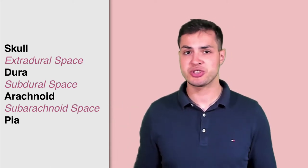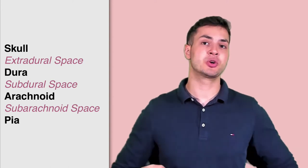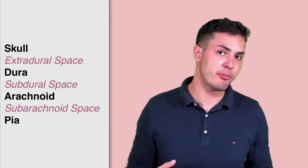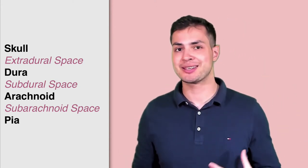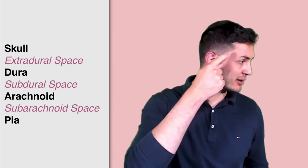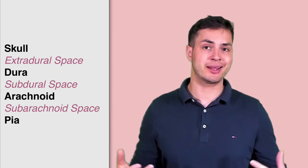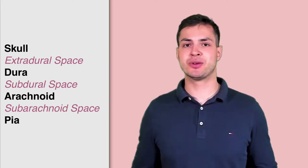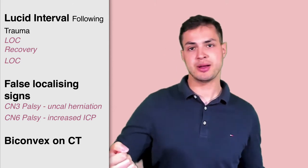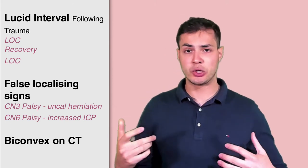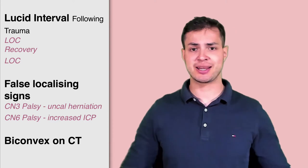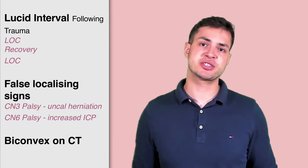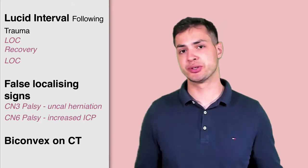Extradural hemorrhages usually happen in young people because the middle meningeal artery runs very superficially over a bone called the pterion, which is the thinnest bone of the skull. Any trauma to the pterion will cause a bleed and injury to this middle meningeal artery. These patients present with a lucid interval: they have the trauma, lose consciousness, then regain consciousness and feel fine apart from a headache. A few hours later they lose consciousness again and could die.